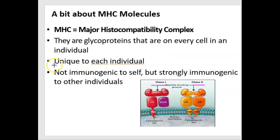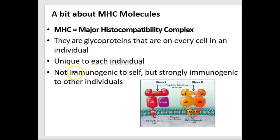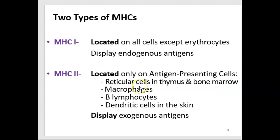MHC molecules are unique for each of us — each individual has a certain sequence of amino acids in their MHC molecule that's different from someone else's. They are not immunogenic to our own body cells, but could be strongly immunogenic to other individuals who might see them as foreign antigens. The two types are called MHC class 1 and MHC class 2, abbreviated MHC1 and MHC2.